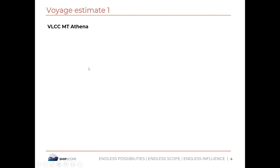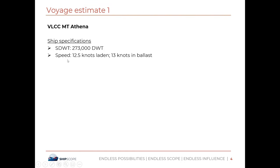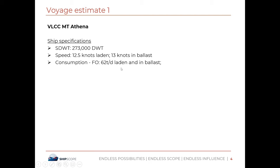Now let's look into the question. Before we proceed, have your calculators ready, pen and paper, and your phone to take a snapshot. We have VLCC empty Athena. The summer deadweight is 273,000 deadweight tons. Speed is 12.5 knots in loaded condition and 13 knots in ballast. Consumption is 62 tons per day fuel oil at sea. In port, idle consumption is 24 tons per day diesel oil, and when working, 38 tons per day diesel oil. Constants are 450 metric tons.